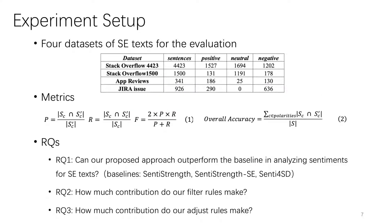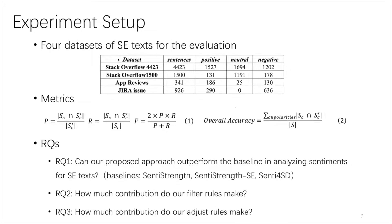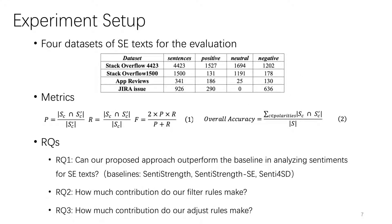We use four high-quality datasets as our benchmark. The details are shown below. We use precision, recall, F-measure, and overall accuracy as our metrics. In order to study whether sentence structures can effectively improve the performance, we propose three research questions. To study RQ1, we introduced three baselines: SentiStrengths, the basis of our approach; SentiStrengths SE, a dictionary-based tool that builds a new dictionary specified for SE texts; and Senti4SD, an SE-customized learning-based tool trained on the Stack Overflow 4,423 dataset, which is also part of our evaluated datasets. To study RQ2 and RQ3, we separately run SentiStrengths with filter rules only and with adjust rules only on the four datasets.